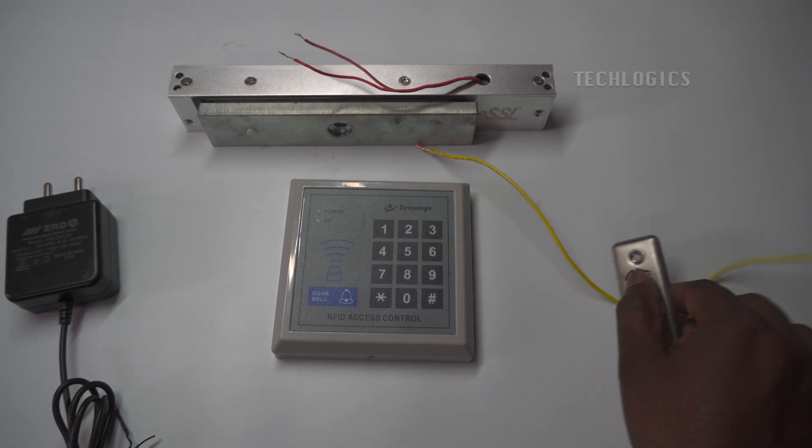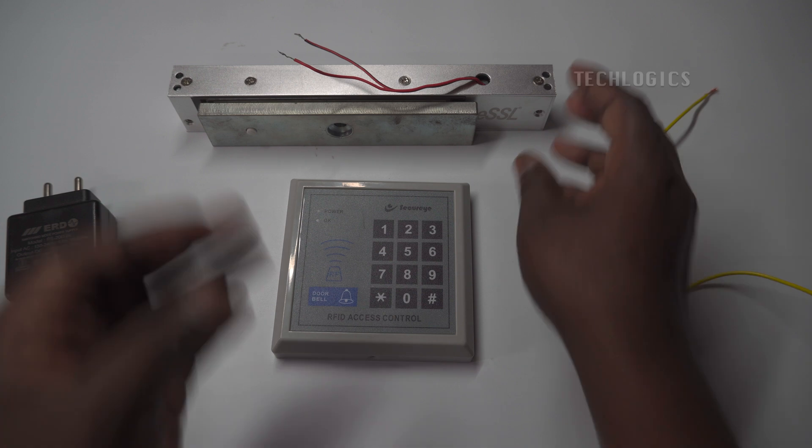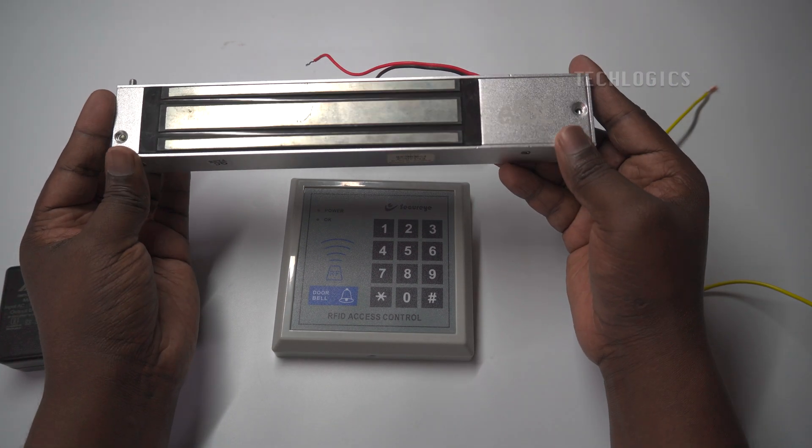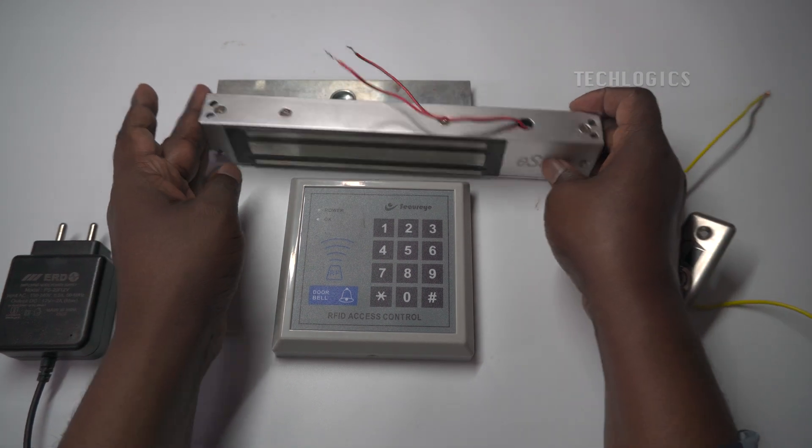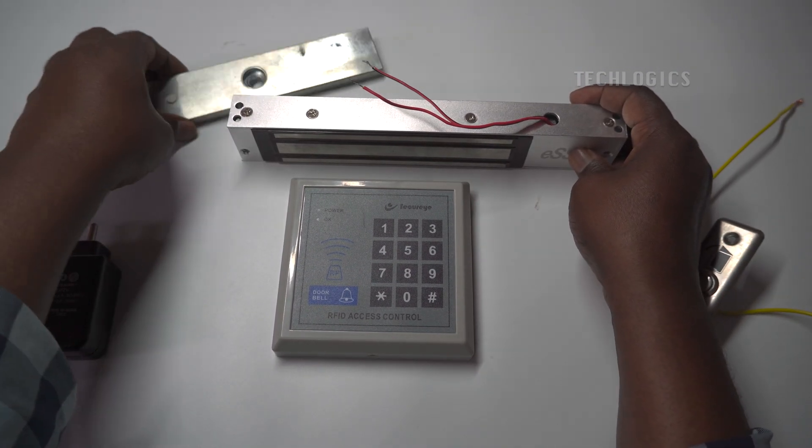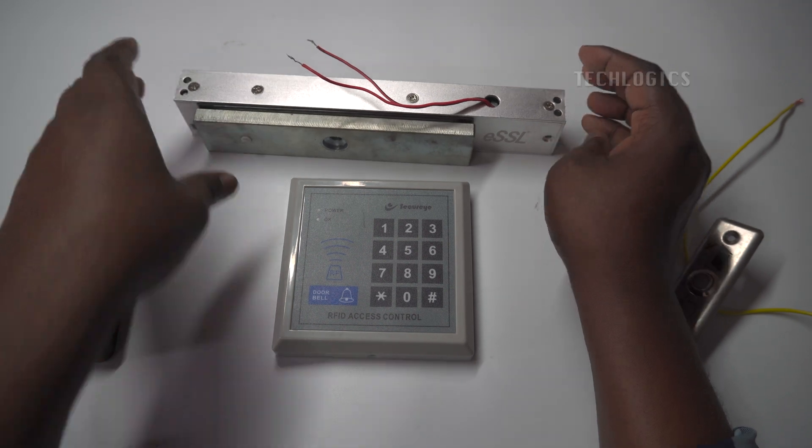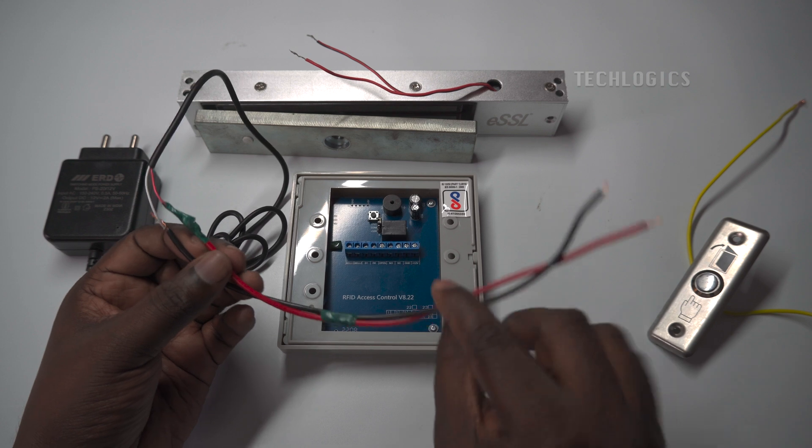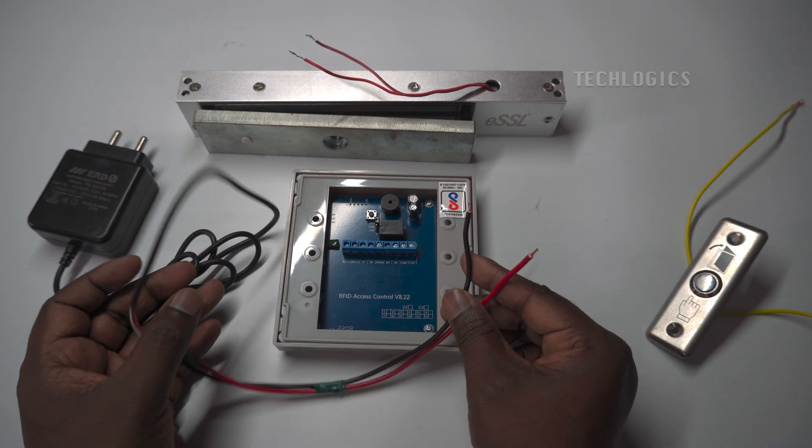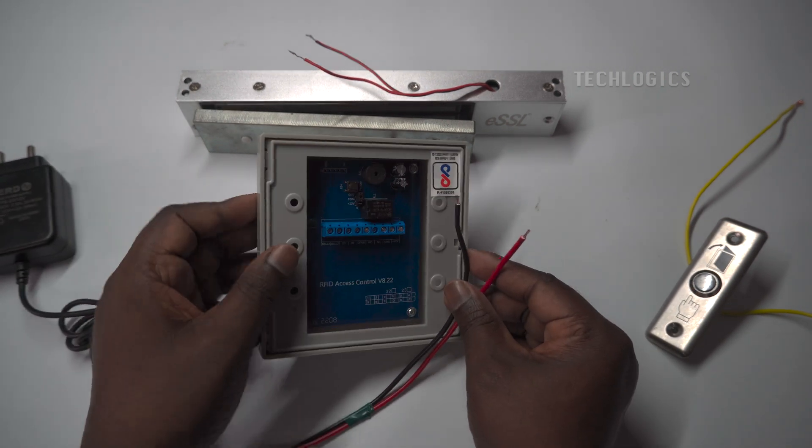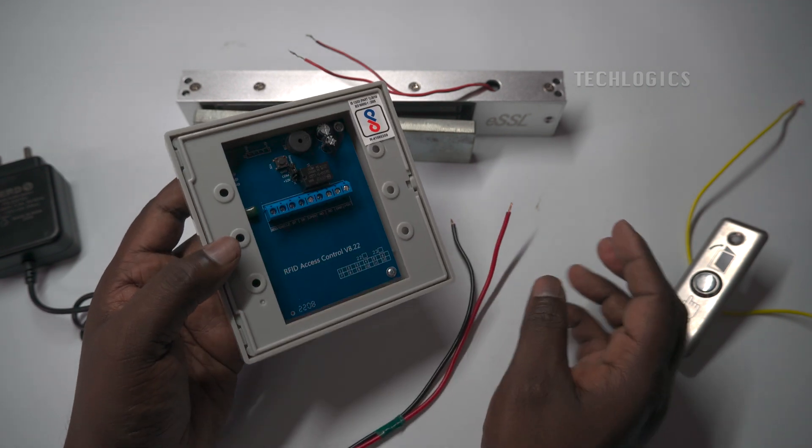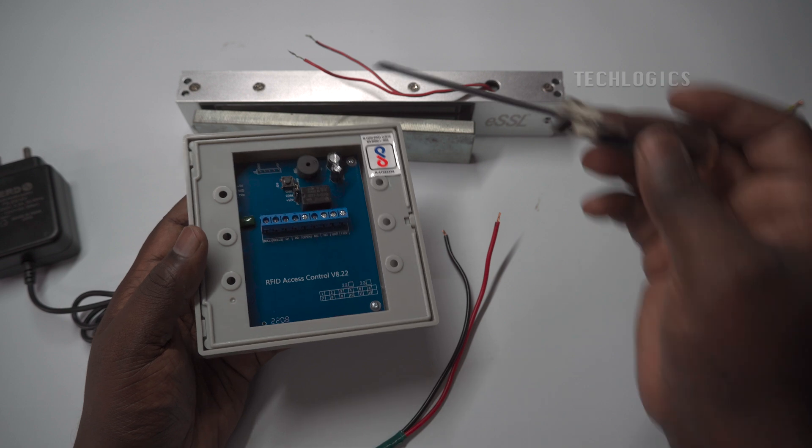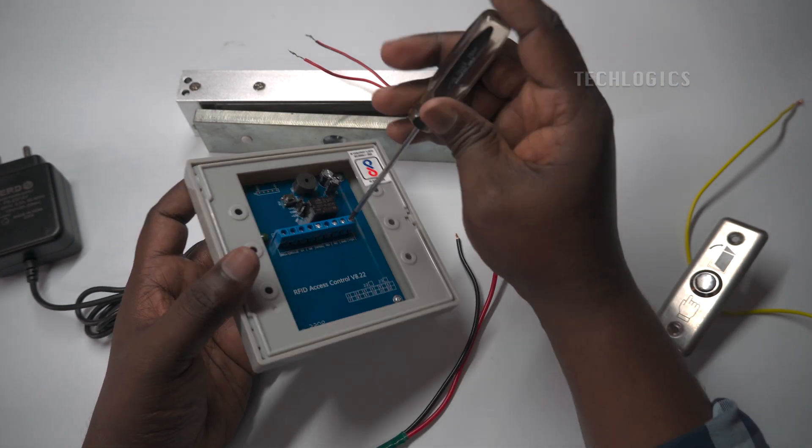First, connect the DC power adapter supply to the controller as per the following diagram. Ensure the power adapter is suitable for the voltage requirements of the controller, usually a DC 12 volt power adapter with an appropriate amp rating, typically 2 amp or above is required.